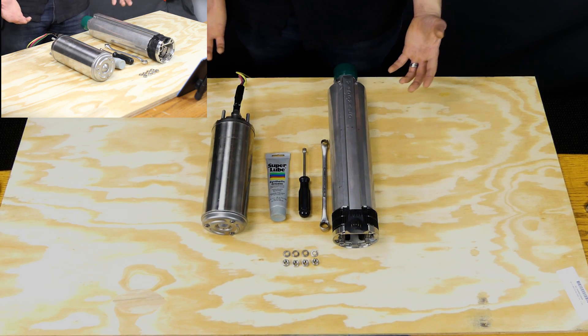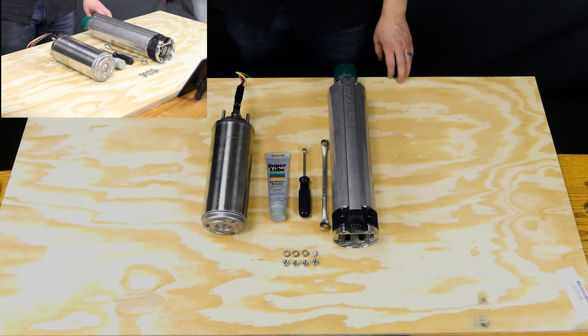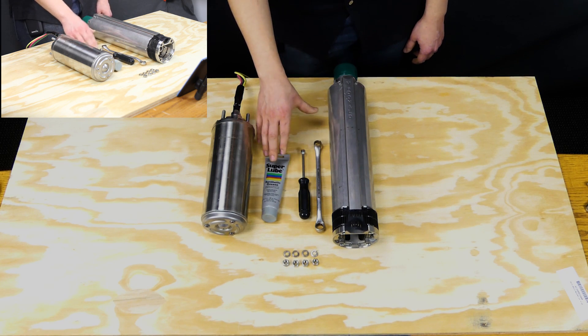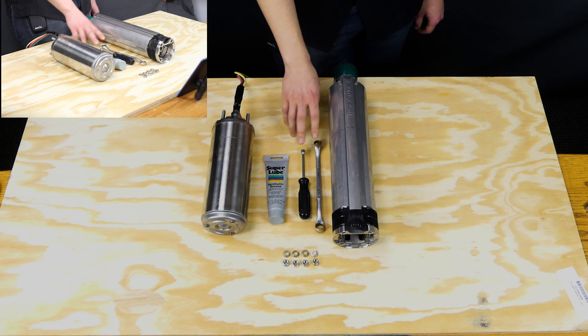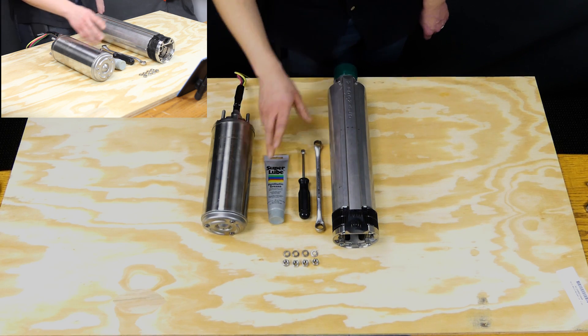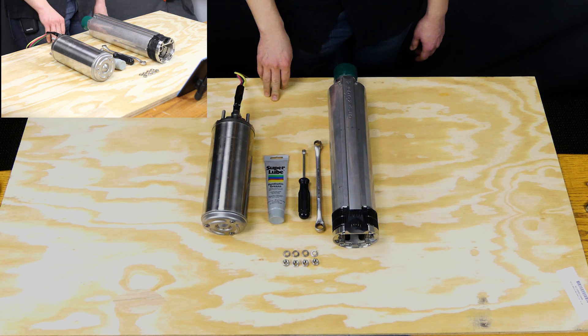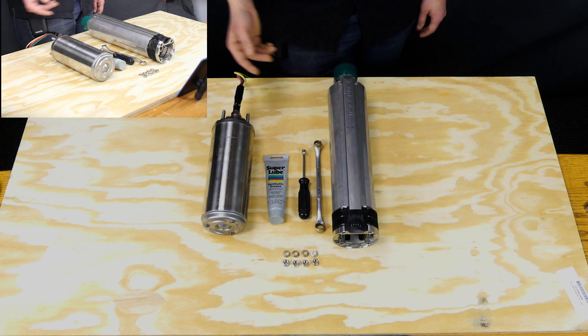Now before we begin the assembly process, we're going to go over the few pieces of equipment you need to put the pump and motor together. We've got our super lube, which is a synthetic grease that we're going to use on the shaft connection. We've got a couple of nut drivers and some lock washers and the appropriate size quarter inch nuts that are going to attach the motor to the pump end.